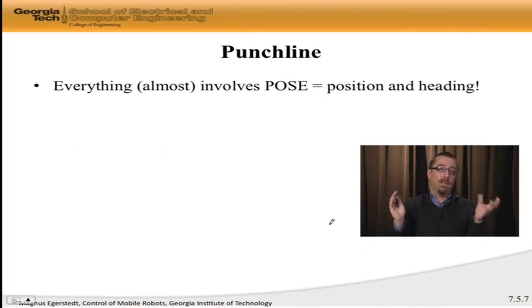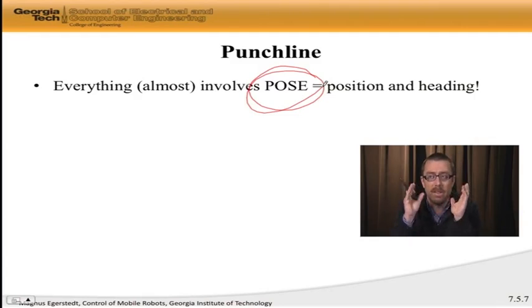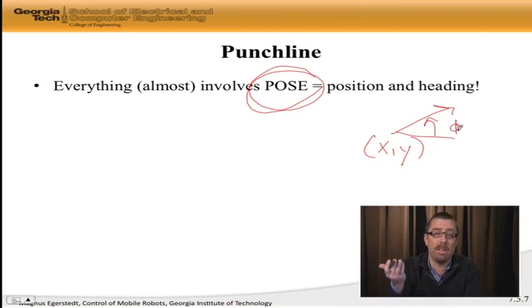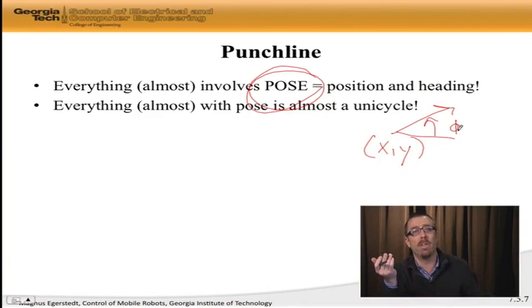All of these robots have some notion of where it is, at least in the plane, and where it's pointing. And if I call position plus heading for pose, the punchline, at least based on the models I showed you - cars, segways, flying things, things underwater, and as we know, differential drive robots - they have this key thing to it known as pose. And pose is x, y, and phi. That's just what's going on. Where is it, and which way is it pointing? It's pointing in the phi direction, and it's sitting at x and y.